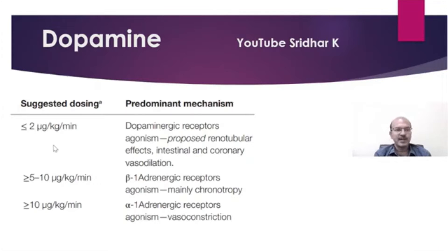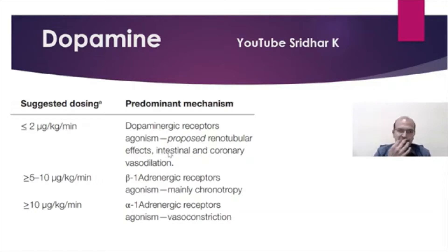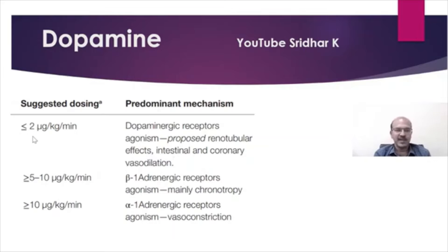So at less than or equal to 2 microgram per kg per minute — most inotropes are dosed in microgram per kg per minute — the dopaminergic receptor mechanism is responsible for the proposed renotubular effect and may also improve intestinal and coronary vasodilatation. However, many people question this and very rarely do we use this dose.